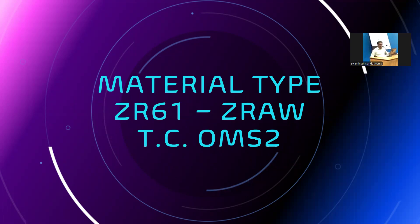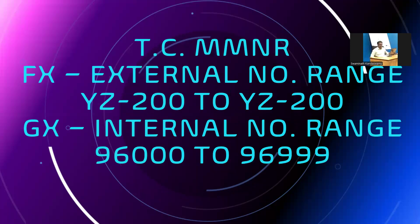They want a material type ZR61 raw material. We'll use OMS2 transaction code. Next, in the MMNR transaction code, I'm going to create an external number range FX and an internal number range GX.